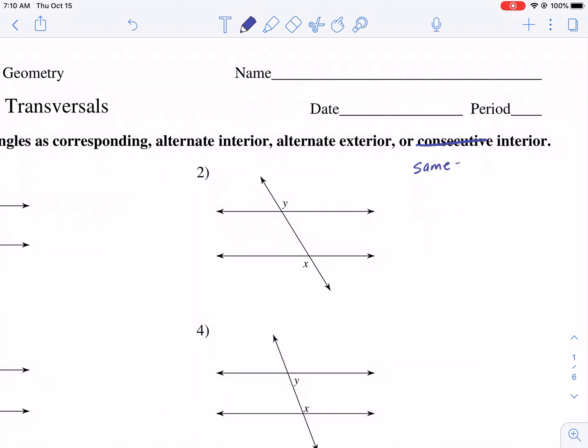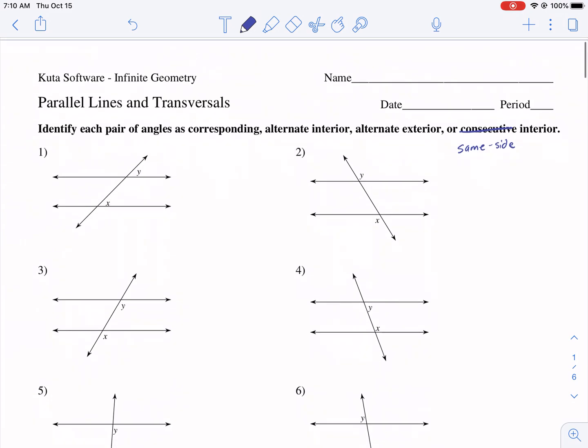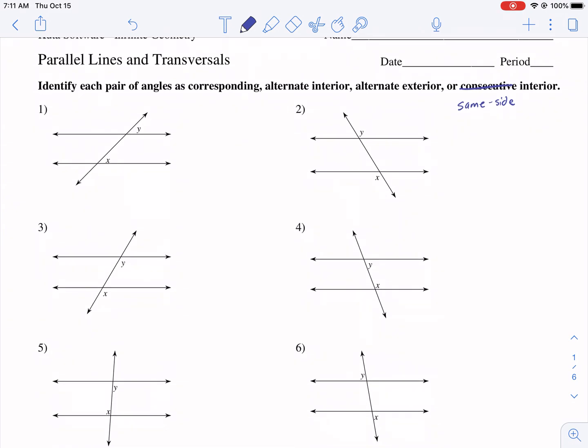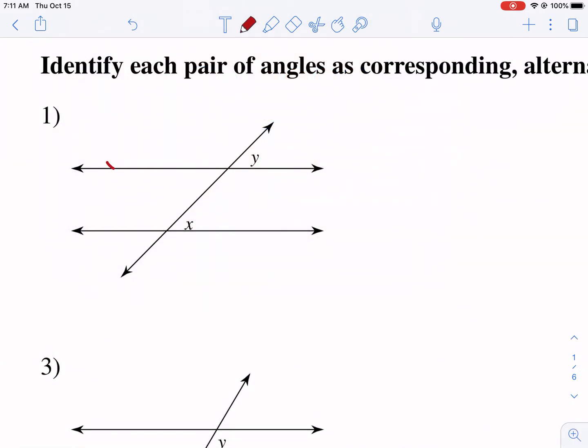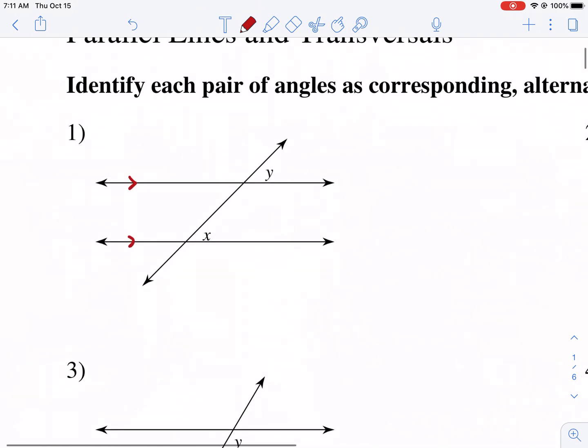Now, what we have to do is first, let's explain what we're talking about here. We have to assume these lines are parallel. It really should have put those arrows there on this worksheet that these lines are parallel.